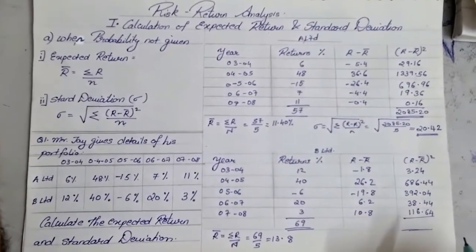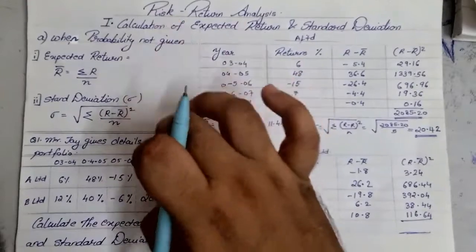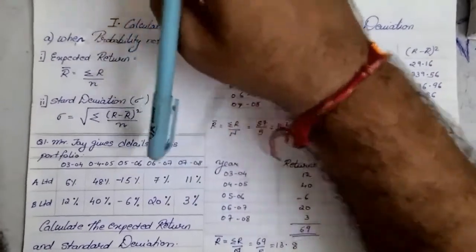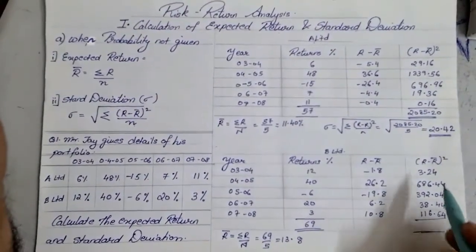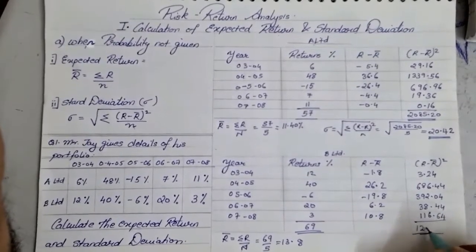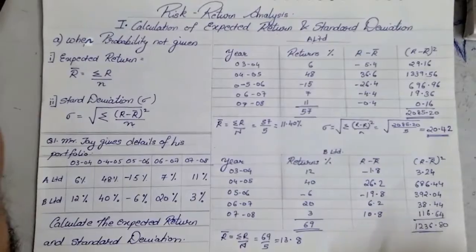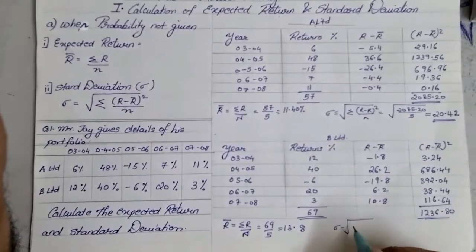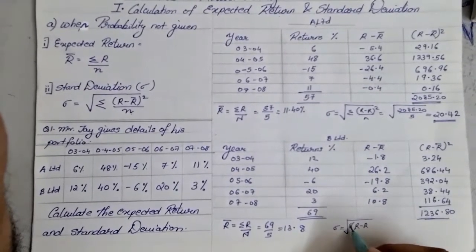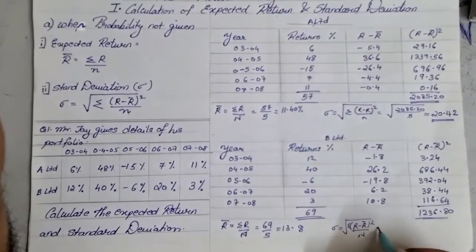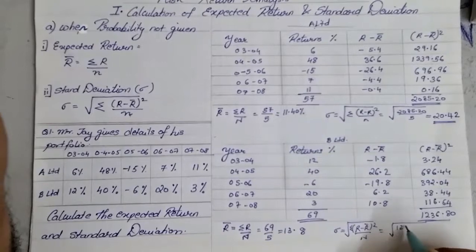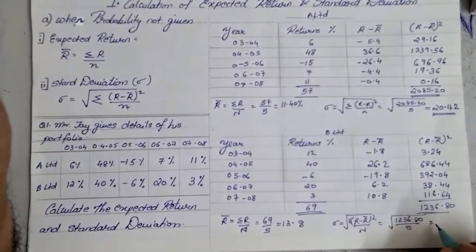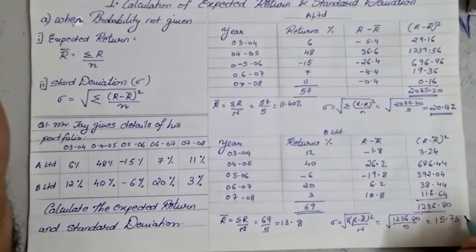Once we total up the squared values, we get 1236.80. The standard deviation is the square root of the total of (R minus R-bar) squared upon N — that is, the square root of 1236.80 upon 5. After dividing and pressing the square root, the answer comes to 15.73%.